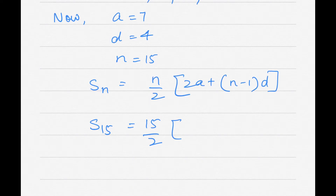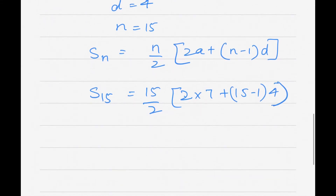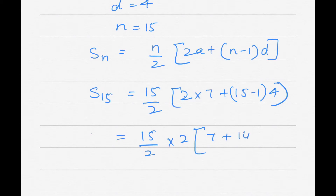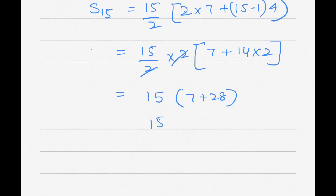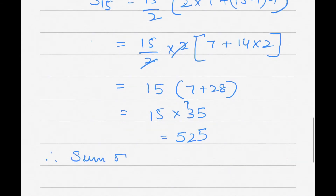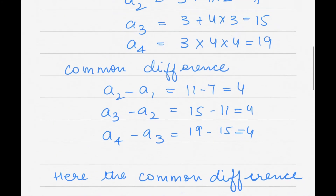S15 = 15/2 × (2×7 + 14×4) = 15/2 × (14 + 56) = 15/2 × 70. The 2s cancel, giving 15 × 35 = 525. Therefore, the sum of 15 terms in the first case is 525.